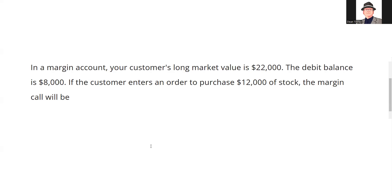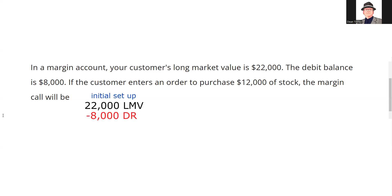In a margin account — here's the explication request question — your customer's long market value is $22,000 and the debit balance is $8,000. If the customer enters an order to purchase $12,000 worth of stock, what will the margin call be? We need to do our initial setup: $22,000 in long market value, $8,000 debit balance — that's what you owe the brokerage firm — so you have $14,000 in equity.